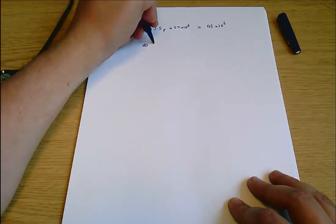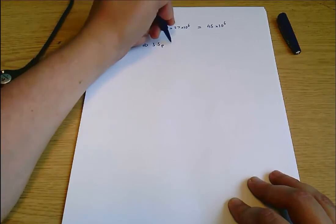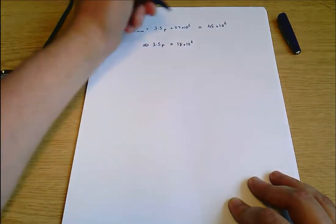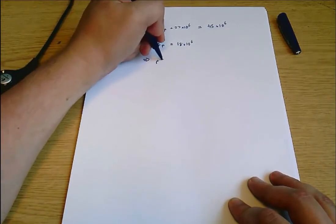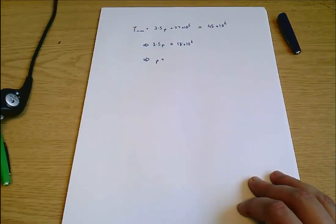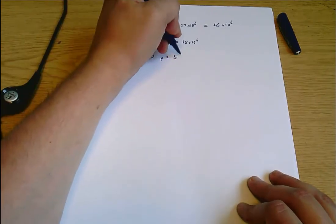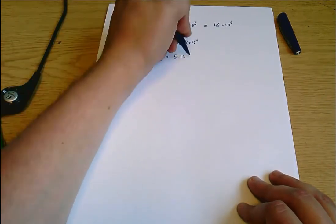Which means that 3.5P equals 18 times 10 to the 6, which means that P equals 18 divided by 3.5, which is 5.14 times 10 to the 6.